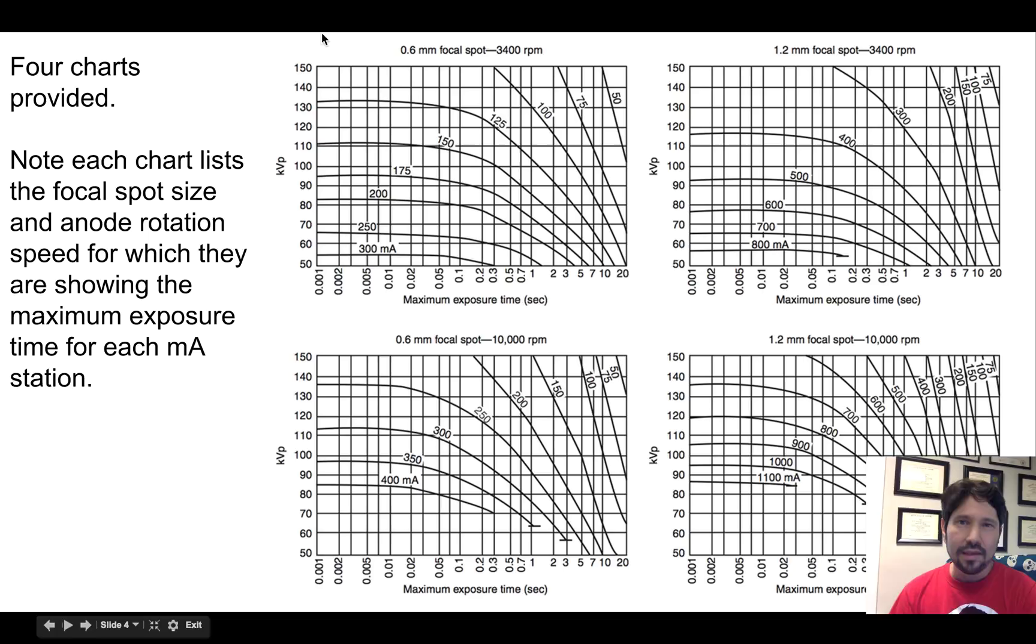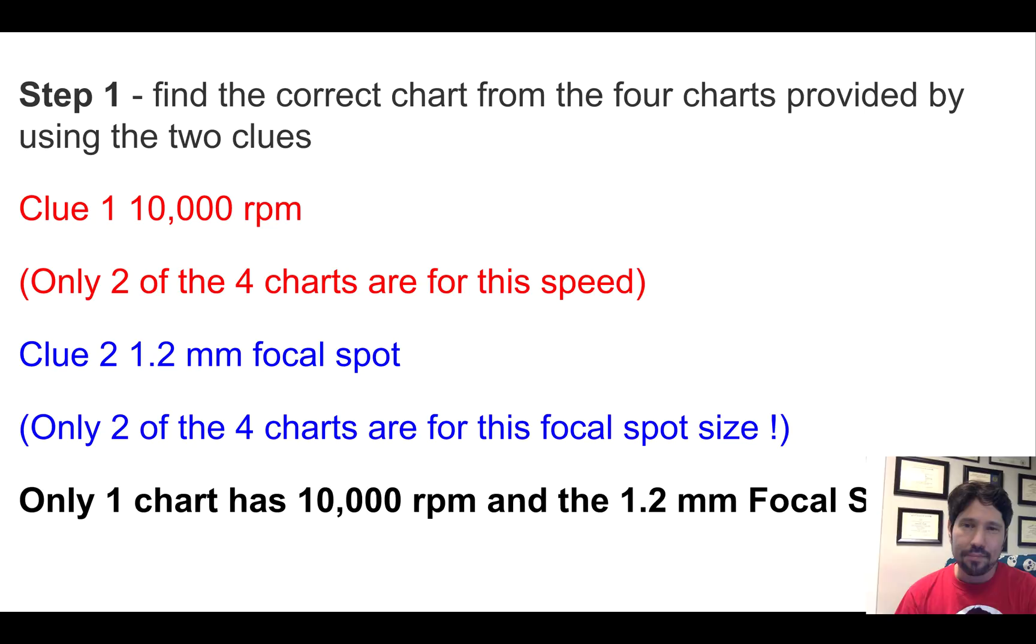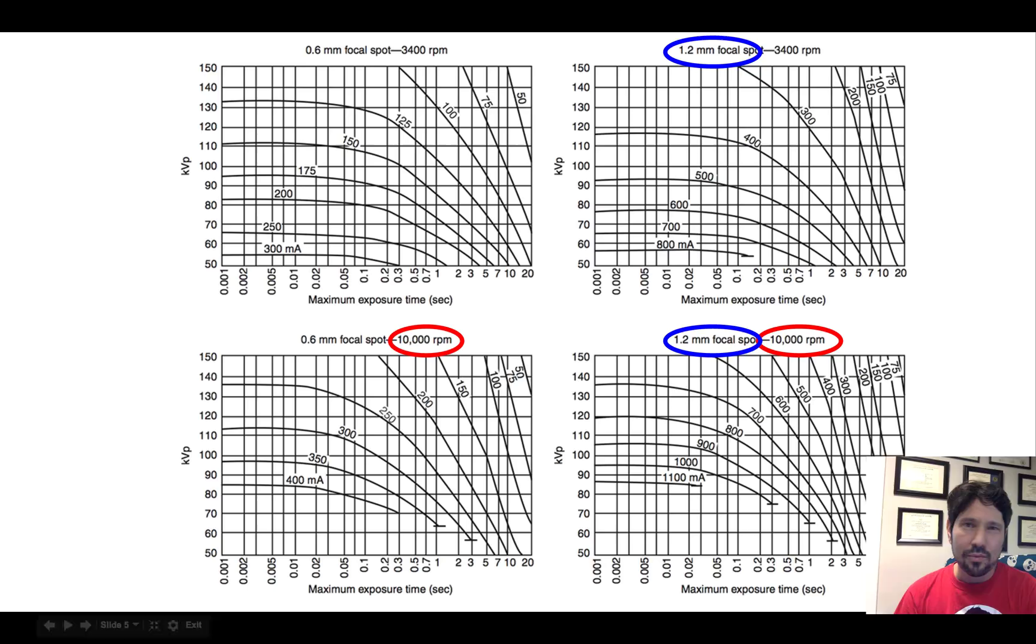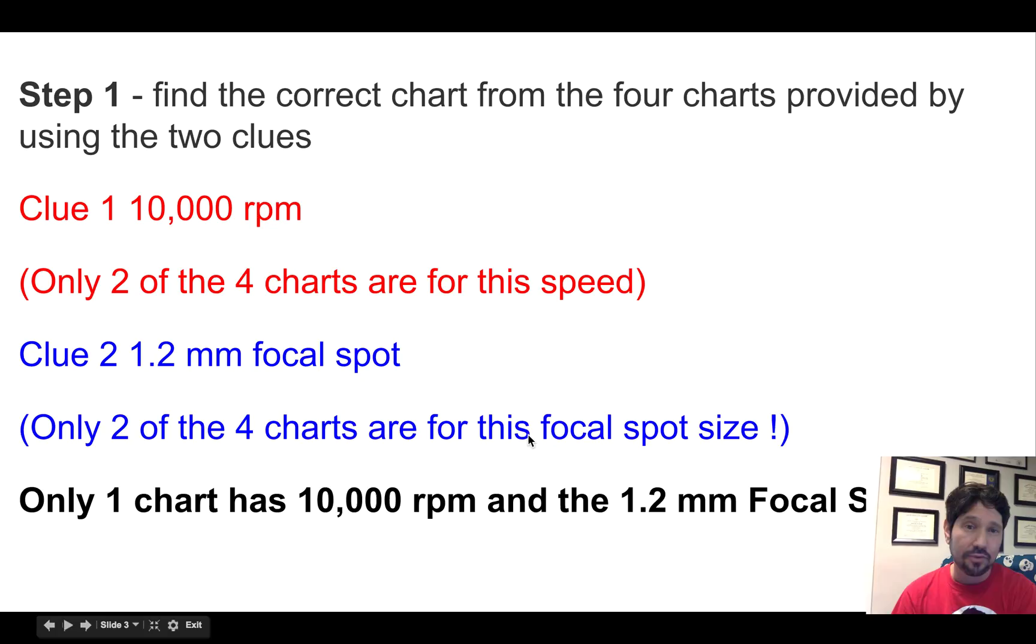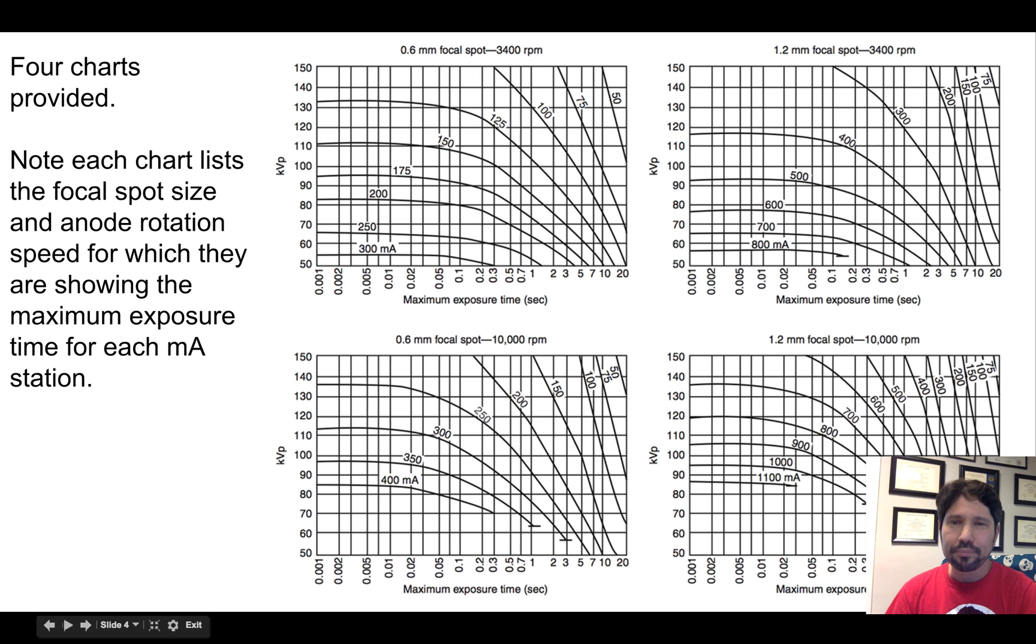So in this problem, Dr. Wuxiang gave us four charts. We can see one chart has 0.6 millimeter focal spot size and 3400 RPM. This one has that small focal spot size, but spinning faster at 10,000. Here's the large focal spot spinning at 3400, and here's the large focal spot spinning at 10,000. So we were given two charts of the four that are for a certain speed, and two of the four that are for the focal spot.